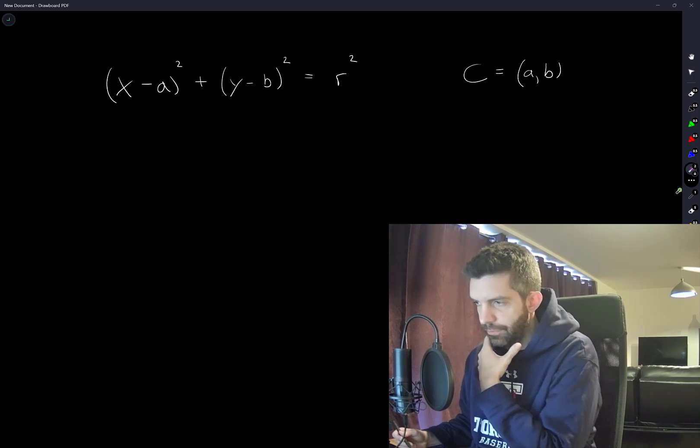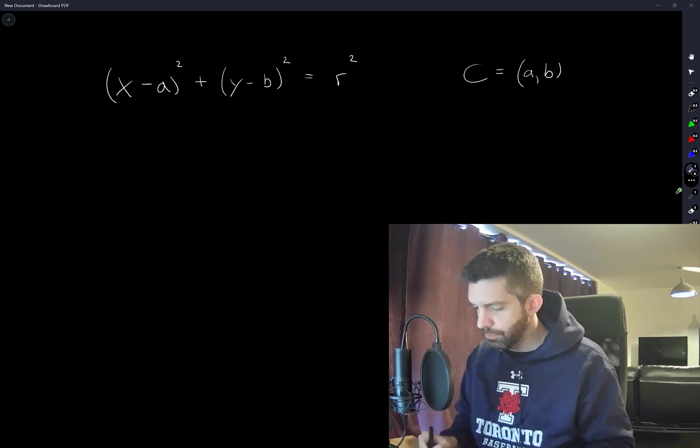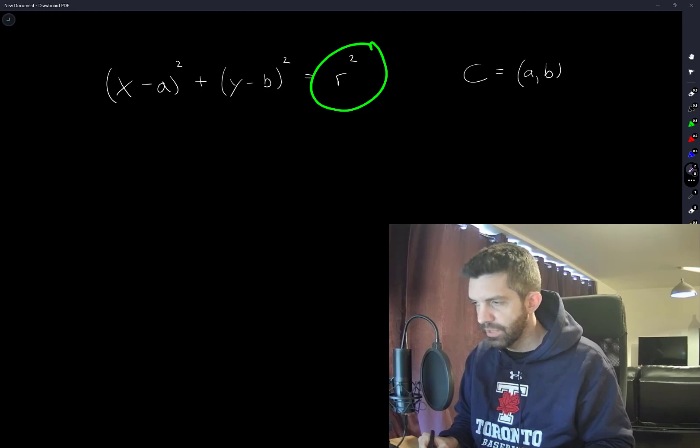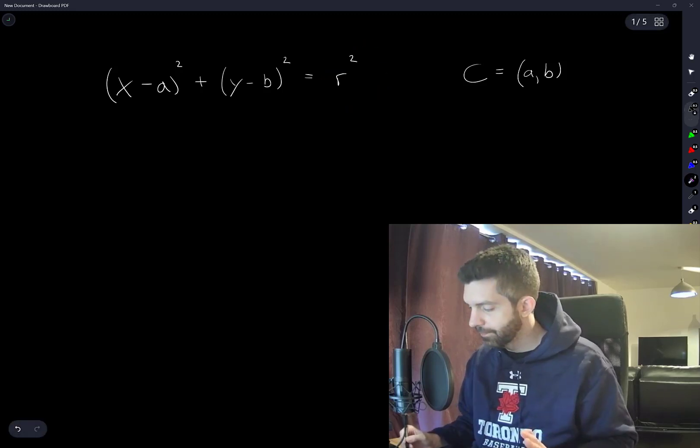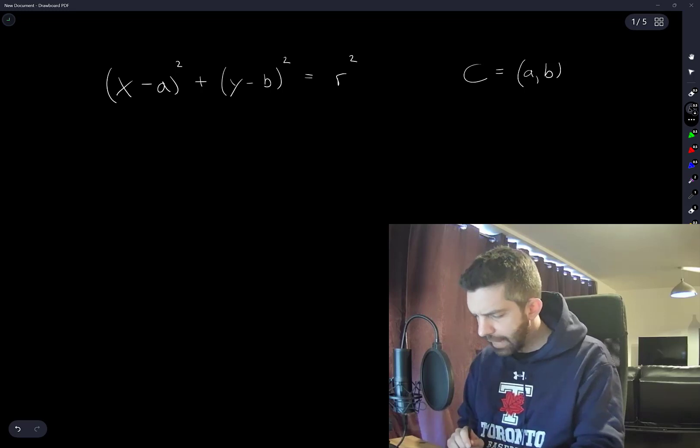And then just seeing which values of theta allow it to be written in this form. In particular, you want the right side of the equation when it's been rearranged. You want the right side to be positive. How about this? Why don't I just expand this?